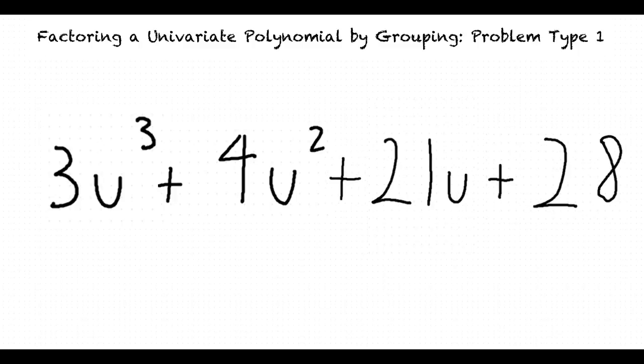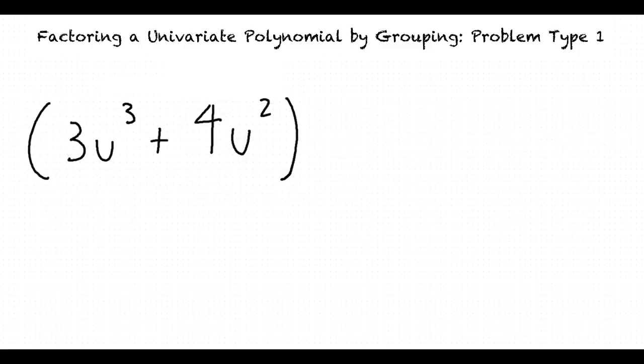I remember how to factor a binomial, but how do we factor a univariate polynomial with four terms? In order to use the grouping method to factor this expression, first separate the first two terms and the second two terms into parentheses. Now our expression looks like two binomial expressions.